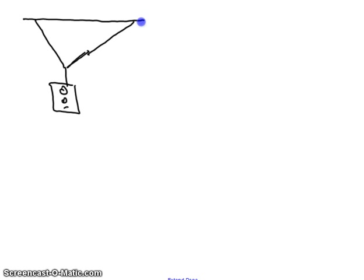Here's an example of a static equilibrium problem. We have a traffic light hanging from two cables that are connected at different angles. There's a traffic light, let's say it's 80 newtons. I have a cable here, we'll call that cable one, and we'll call that cable two over there.